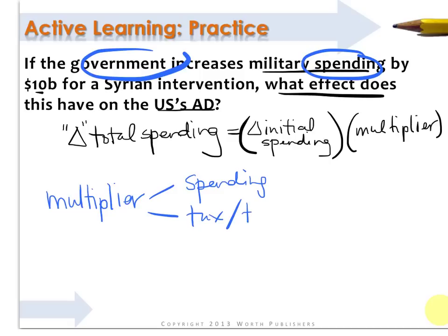There's also the tax and transfer multiplier — that's the multiplier used when there's a tax cut, increase, or a change in transfers. The reason this differs from the spending multiplier is that transfers or taxes are indirect: they land in someone's pocket rather than going directly into the economy, and a portion will be saved before it gets spent, making it a smaller, more muted effect. The last one we don't need just yet is the monetary multiplier. All three function similarly, multiplying a change in spending — or in the case of the monetary multiplier, money supply — into something much larger than the initial injection.